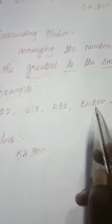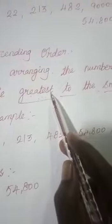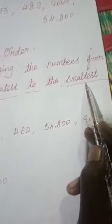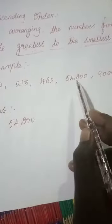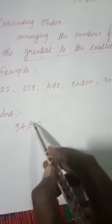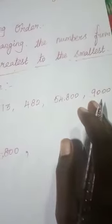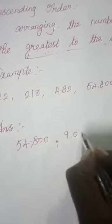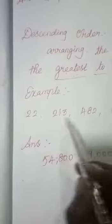Now we'll write the same numbers in descending order. Descending order means from the greatest to the smallest — from the biggest to the smallest. Which one is the biggest here? The five-digit number, fifty-four thousand eight hundred. The next one is the four-digit number — nine thousand.